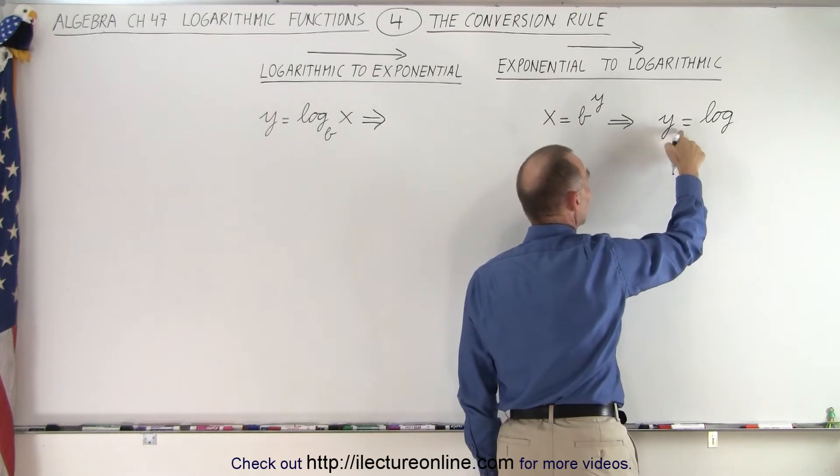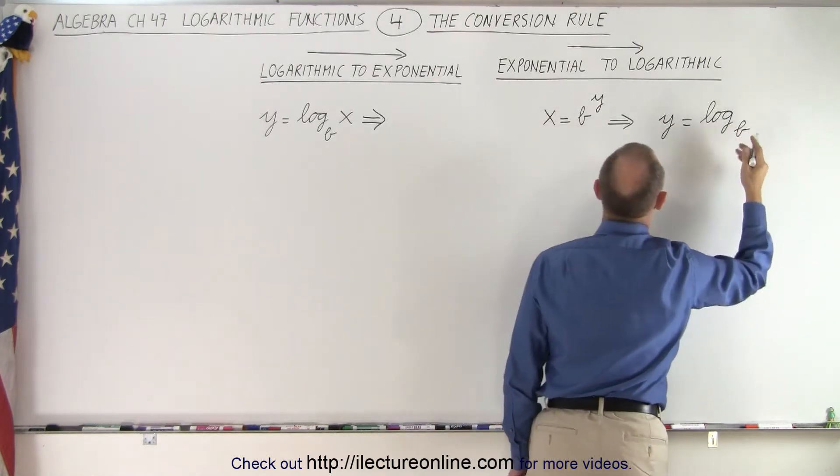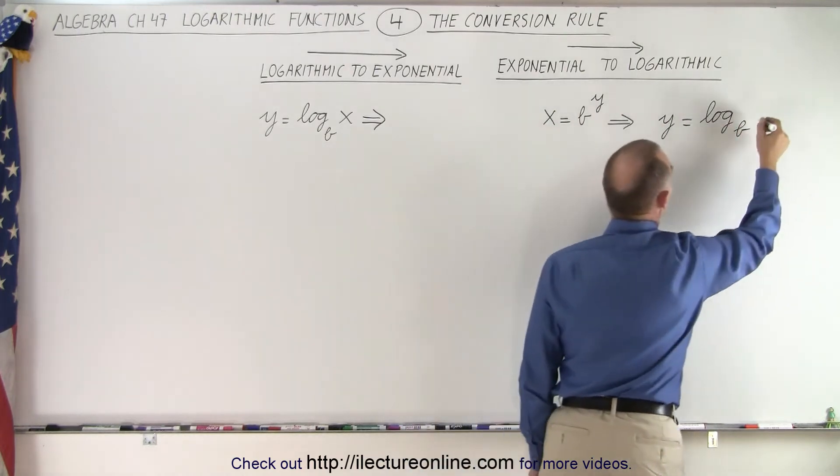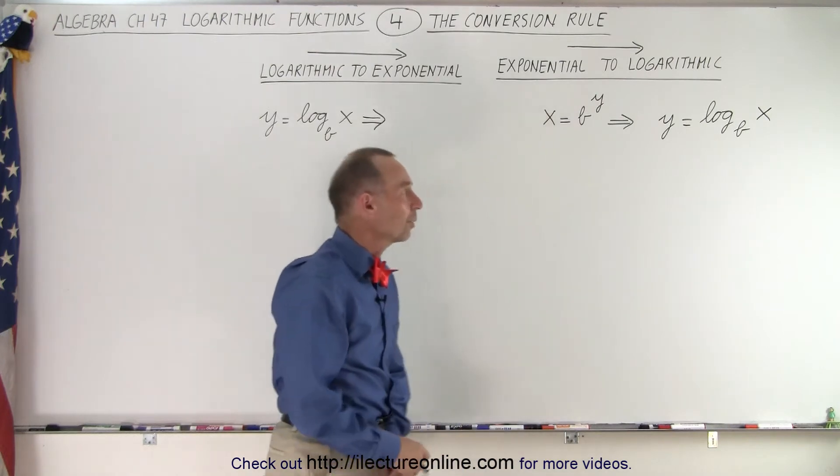The exponent goes to the left side of the equal sign. Then this gives you log to the base b, and then the only thing you have left is x on the other side, which becomes part of the function of the logarithmic function.